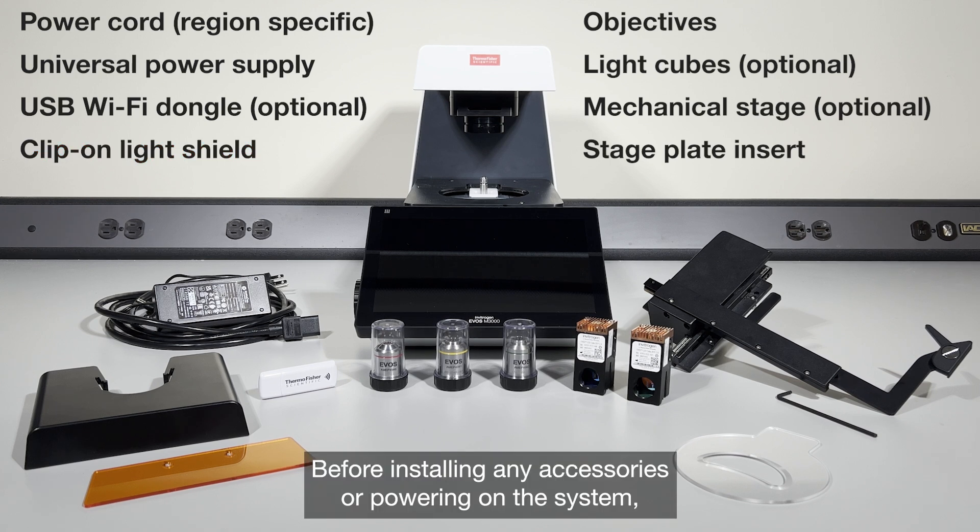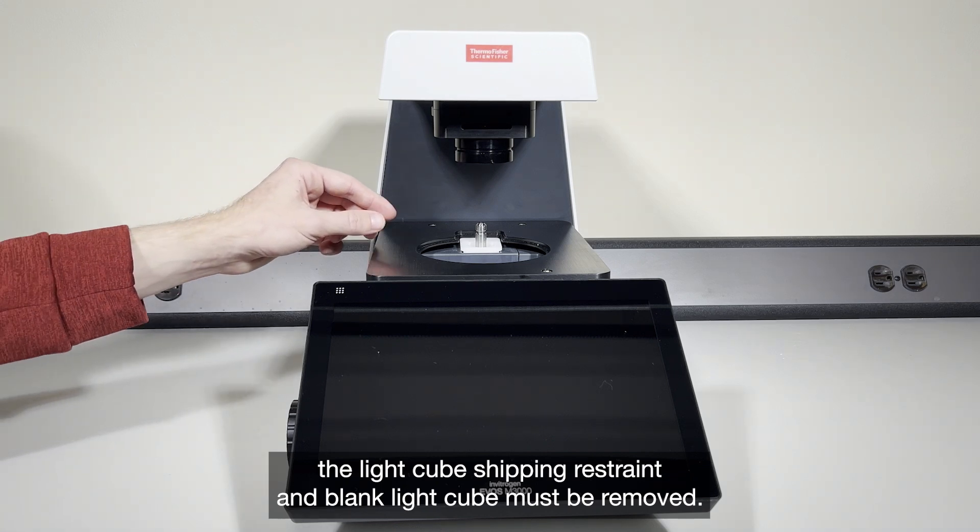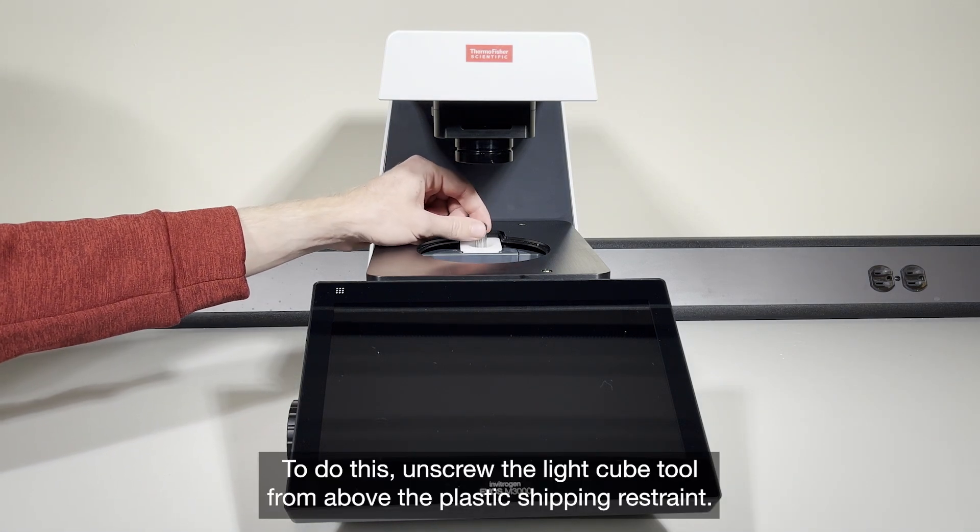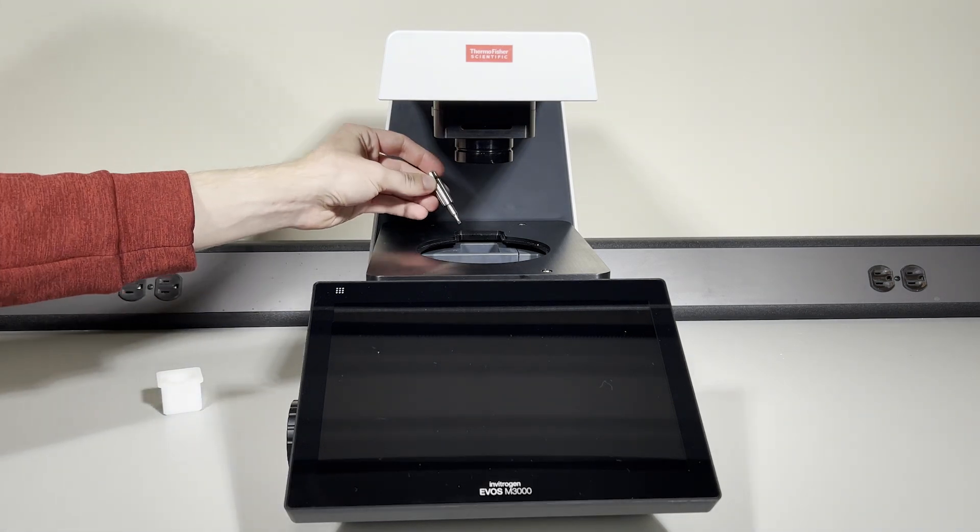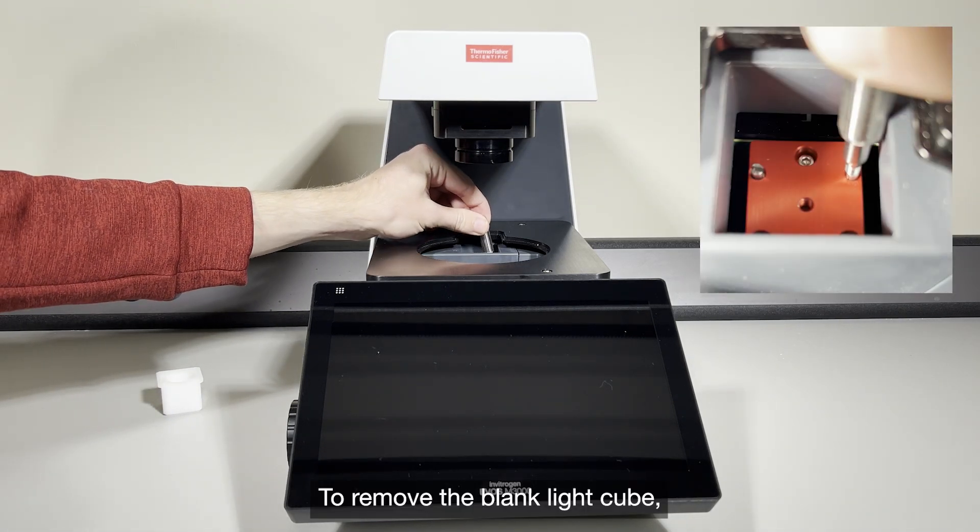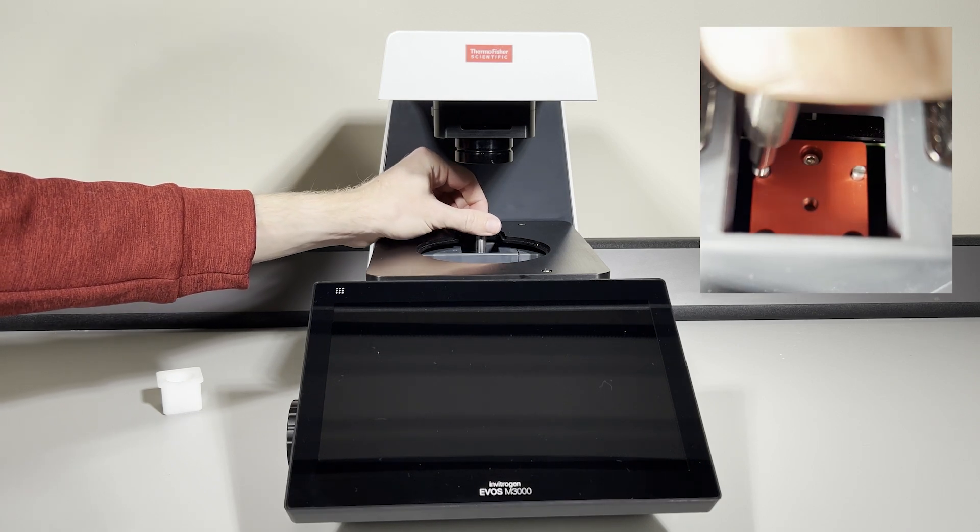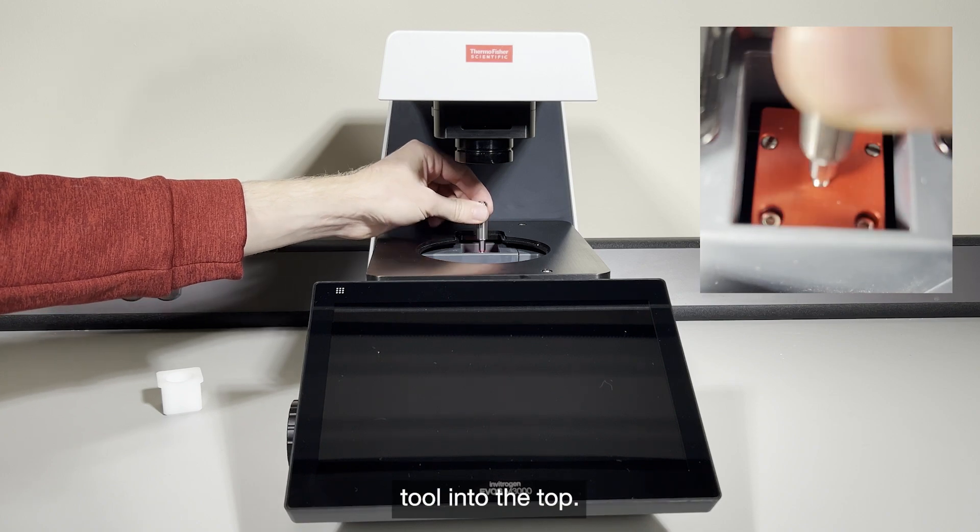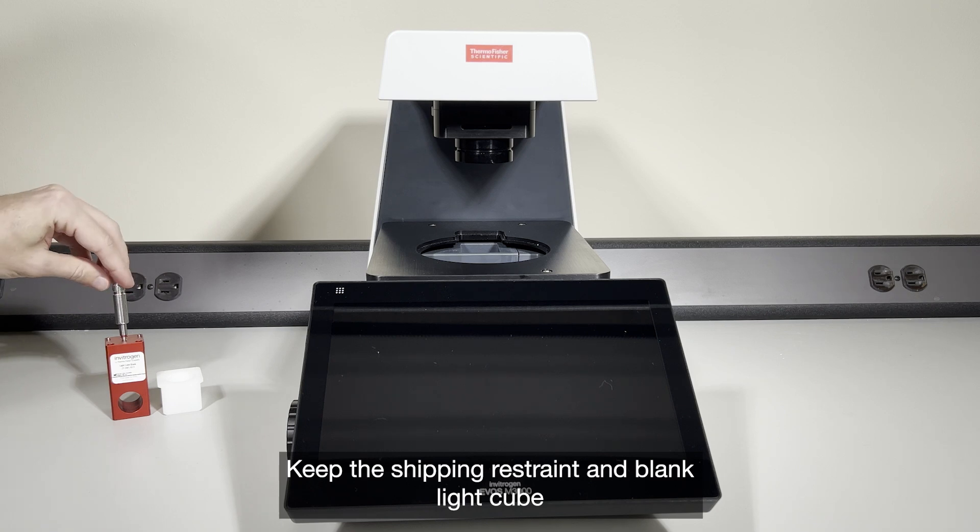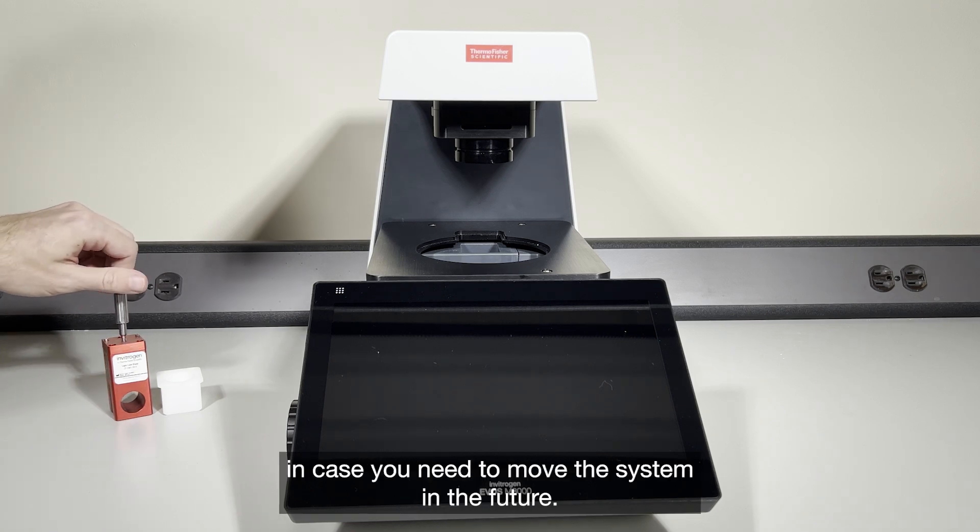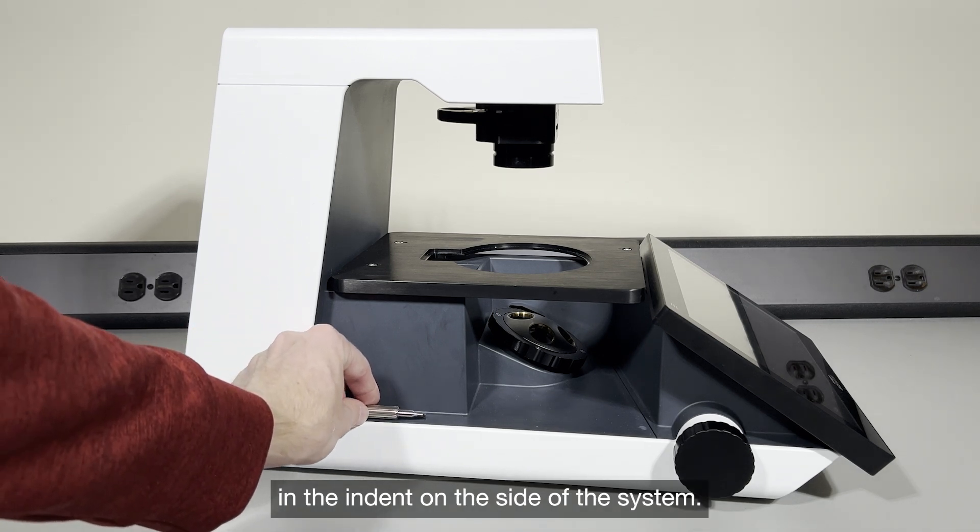Before installing any accessories or powering on the system, the light cube shipping restraint and blank light cube must be removed. Unscrew the light cube tool from above the plastic shipping restraint. The shipping restraint will come out freely. To remove the blank light cube, loosen the screws in the top of the blank and lift it out by screwing the light cube tool into the top. Keep the shipping restraint and blank light cube in case you need to move the system in the future. The light cube tool can be kept in the indent on the side of the system.